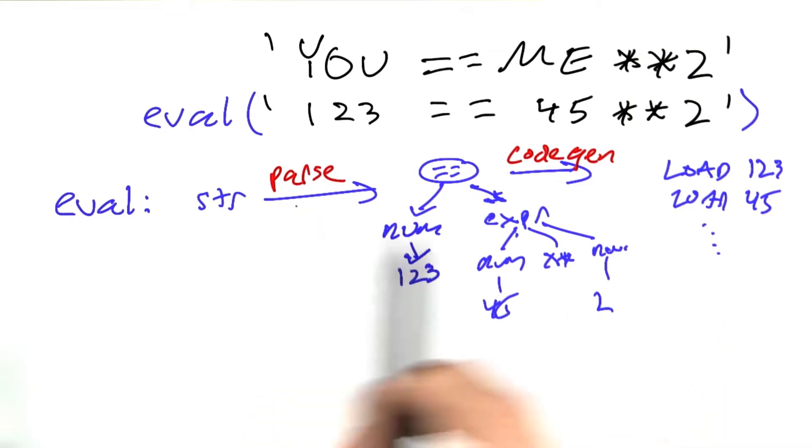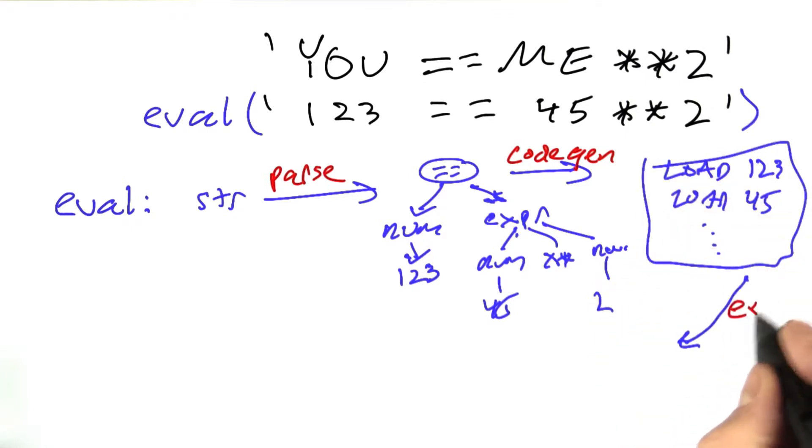and then return the result. So that's a lot of work to build up this tree, generate the code, and then finally, the final operation after we've come up with this is to execute this code and come up with an answer, which in this case would be false.